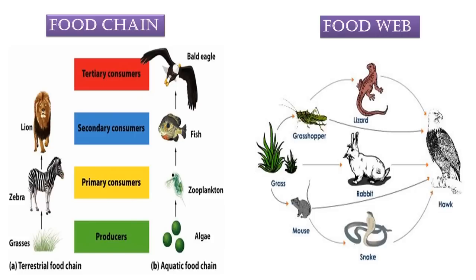Here you can see pictorial representations of both the food chain and the food web. In a food web, each component could be consumed not just by one member but by a variety of members. For example, the mouse is a food source for the snake or the hawk. The hawk can be considered as the apex predator since it can consume almost all of the consumers depicted in this food web.